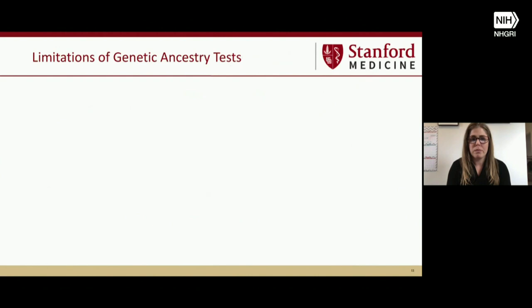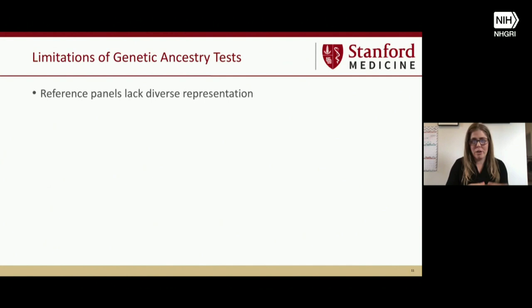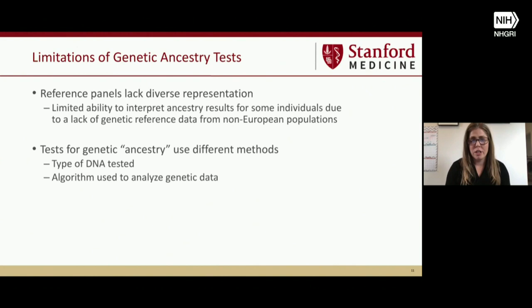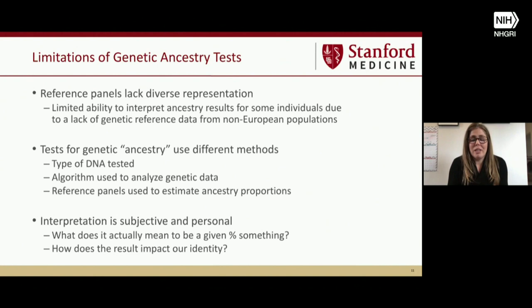So there are real limitations. A huge one is that reference panels lack diverse representation. If everything is relative and you're making comparisons, you don't have the granularity in non-European populations to give accurate and specific ancestry results. Additionally, different companies and teams use different methods — they differ on the type of DNA used, the algorithm, the reference panels, and interpretation. So what does it actually mean when a company says you're a certain percent of something? How does the result impact our identity? I'm looking forward to hearing Dr. Roth address that question in her talk.